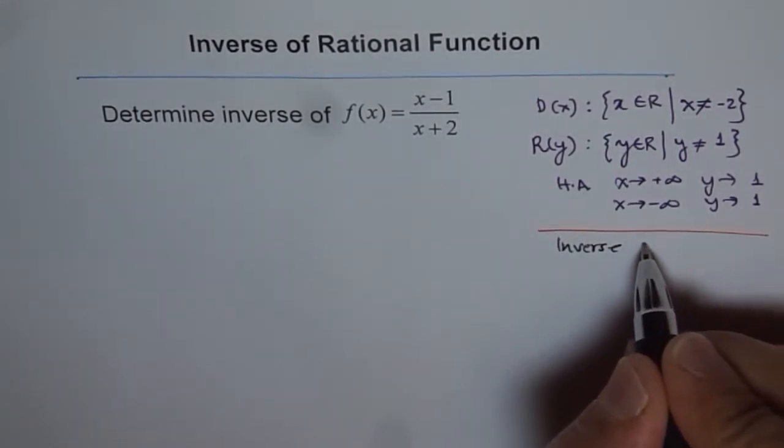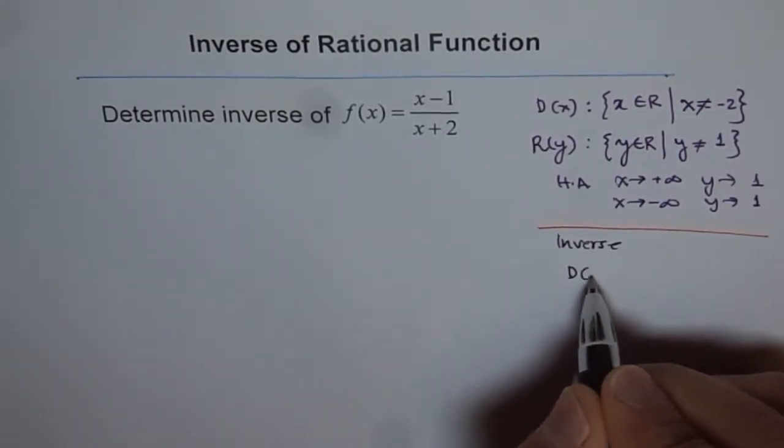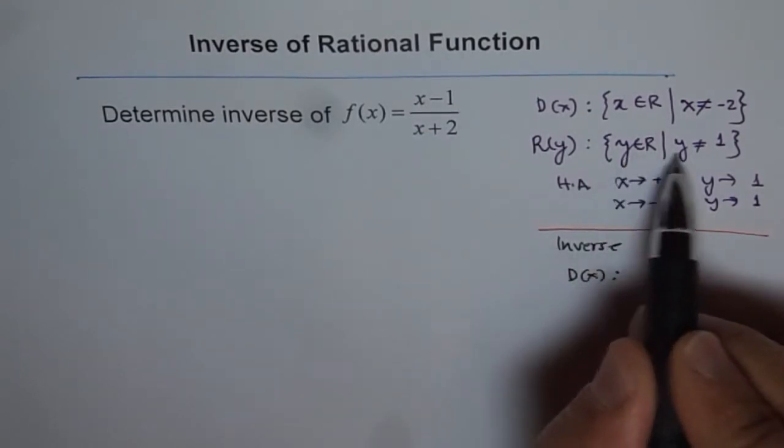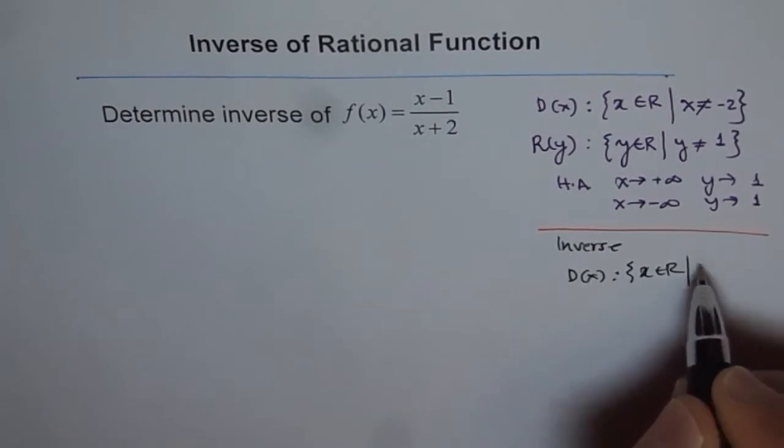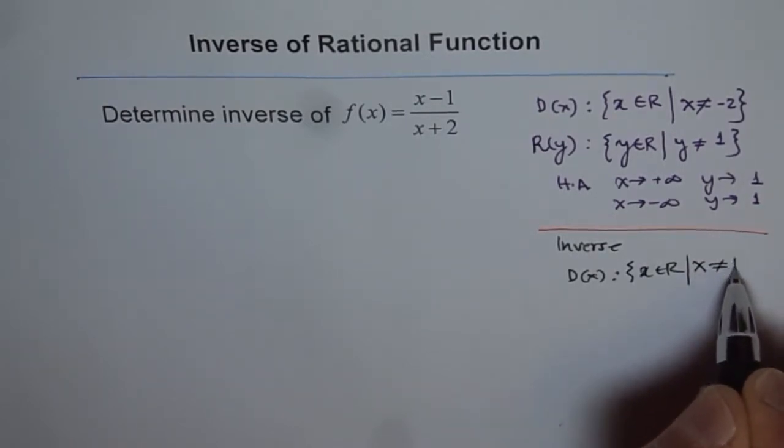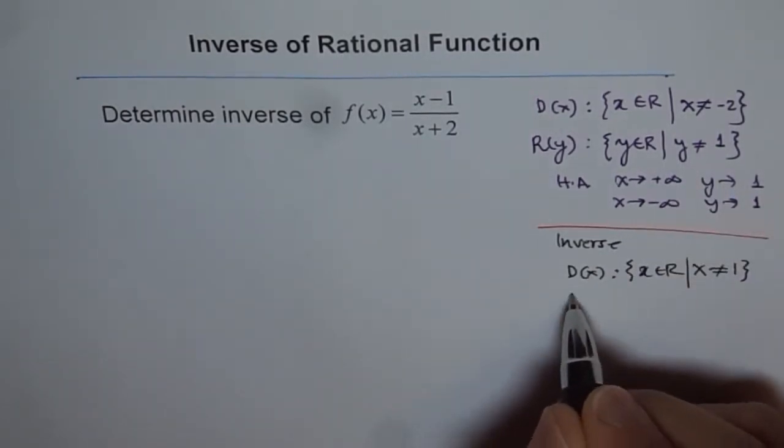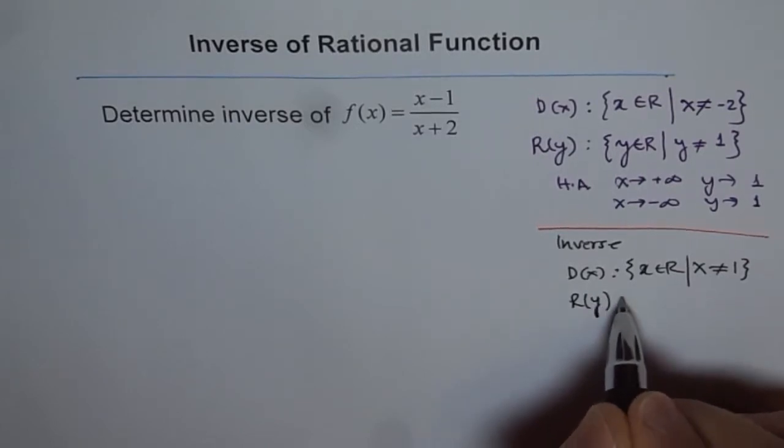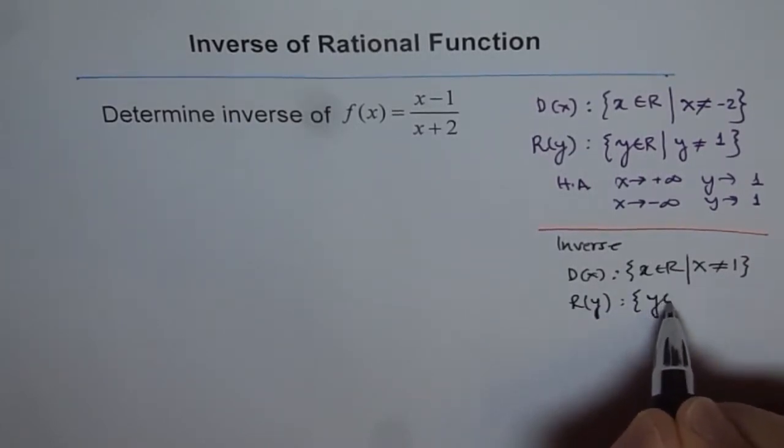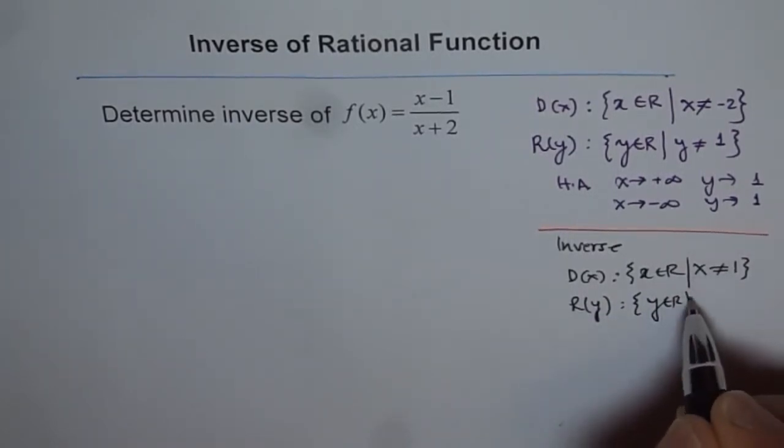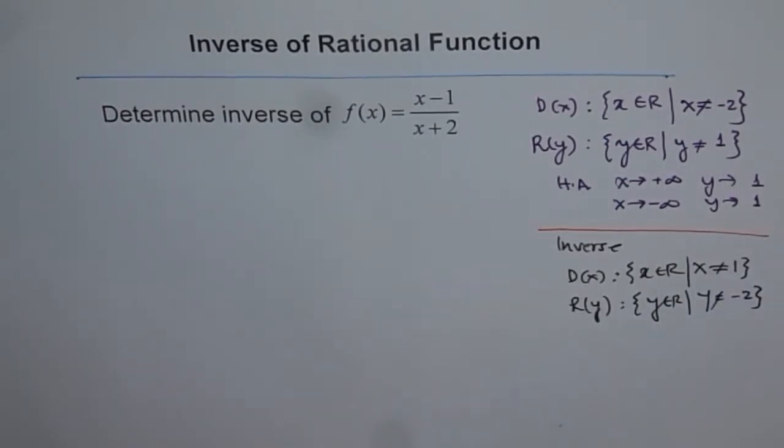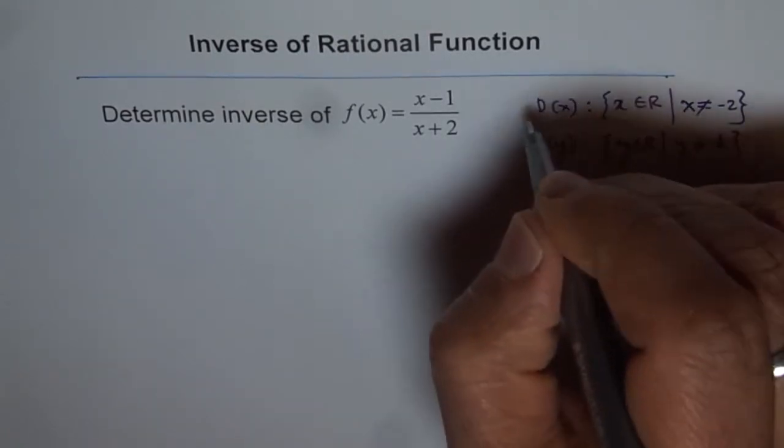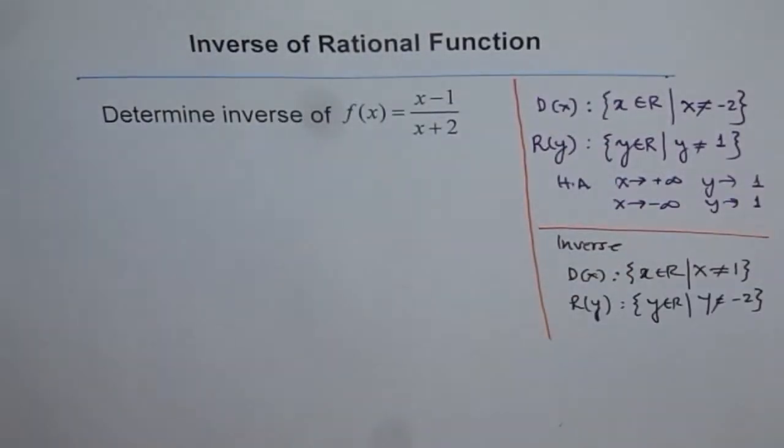So inverse of this function will have domain, which is going to be this. That means x belongs to real numbers, where x is not equal to 1, they will swap. And range will be that y belongs to real number, but y is not going to be equals to minus 2. So this is the kind of domain and range that we are expecting for this particular question.